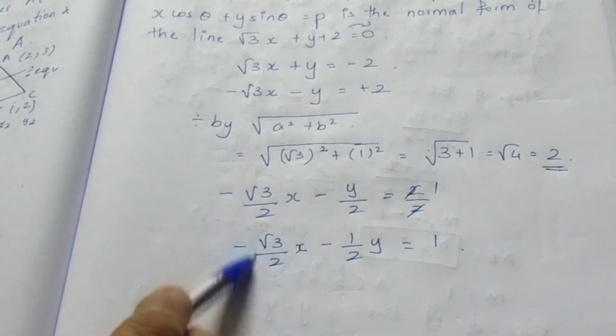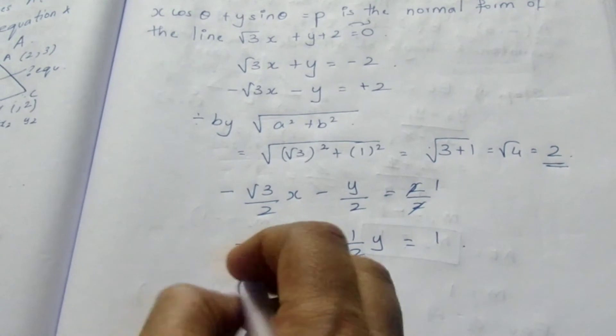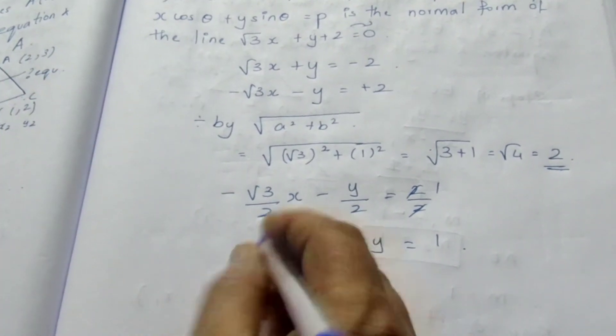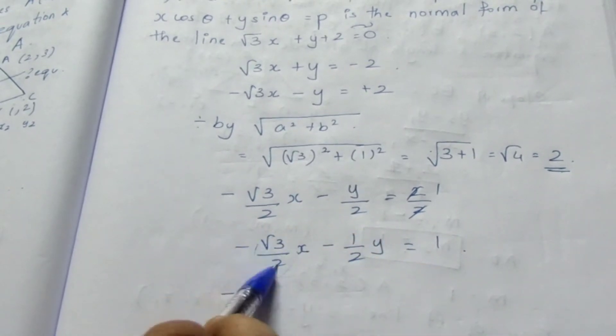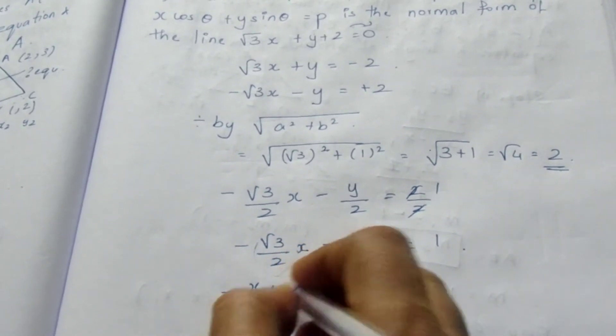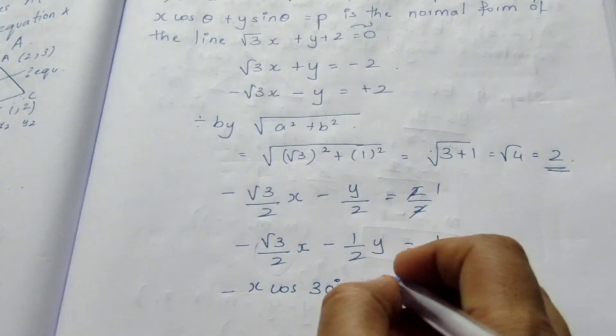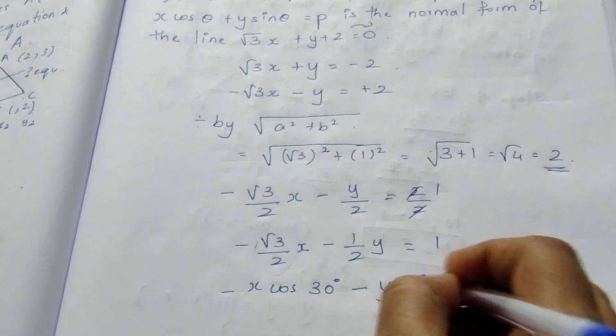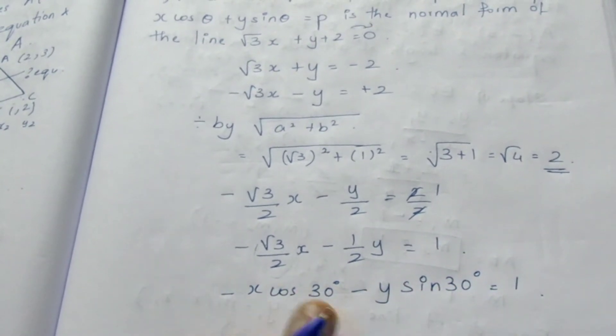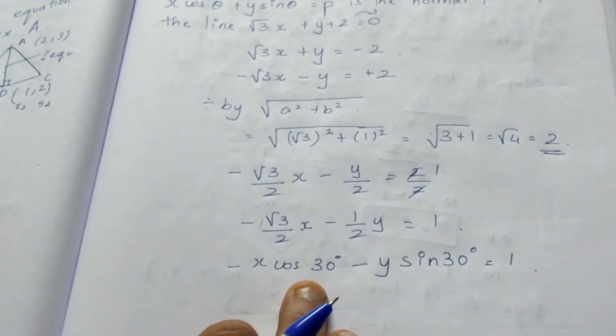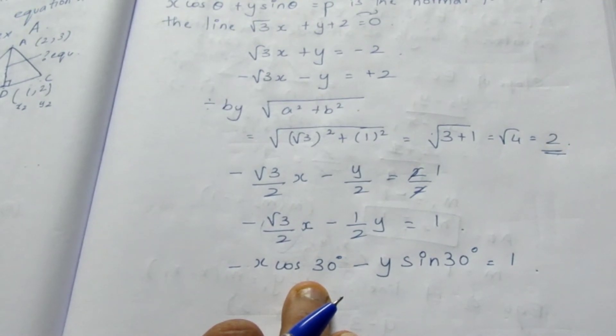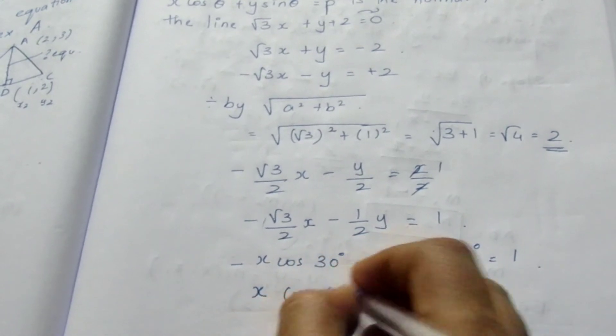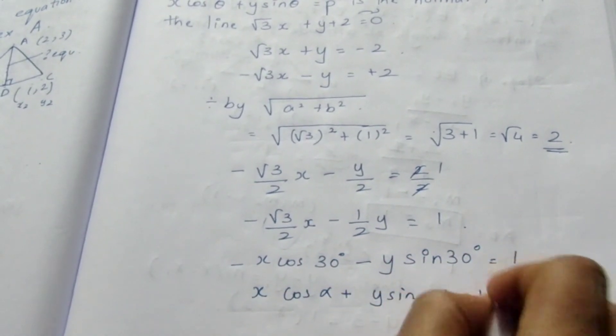Instead of root 3 by 2, we can write this as root 3 by 2 is cos 30 minus y into sin 30 equal to 1. It cannot be negative because of cos 30 value. We need to convert this to x cos alpha plus y sin alpha equal to 1.